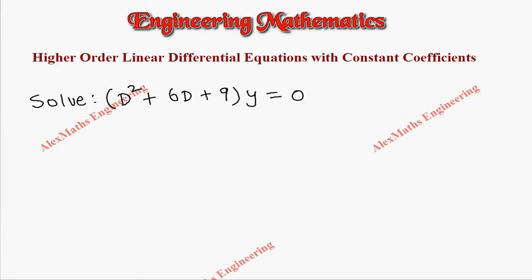Hi students, this is Alex. The question is: solve (D² + 6D + 9)y = 0. As a first step, we have to write the auxiliary equation where we replace D with m, so m² + 6m + 9 = 0.